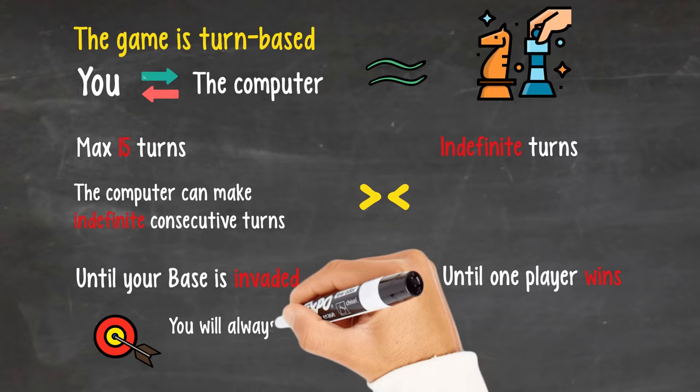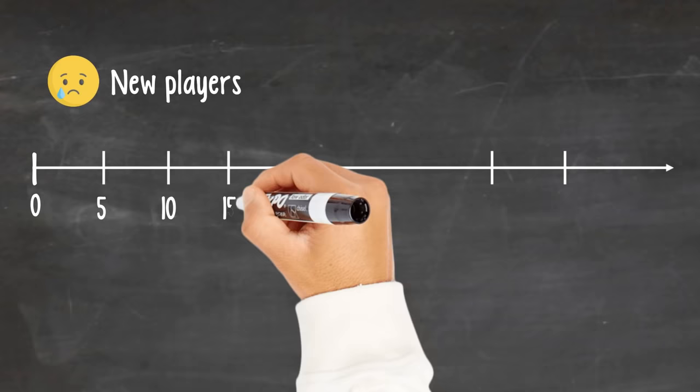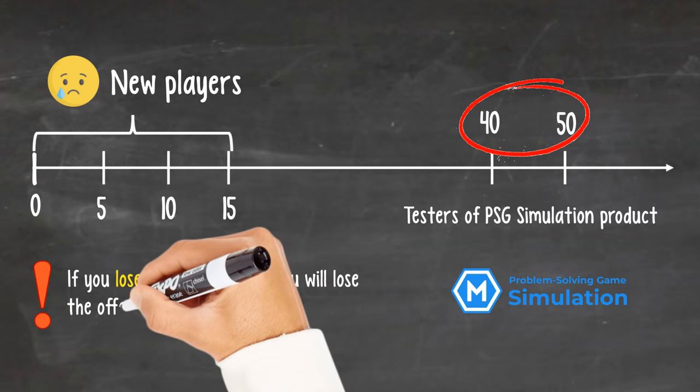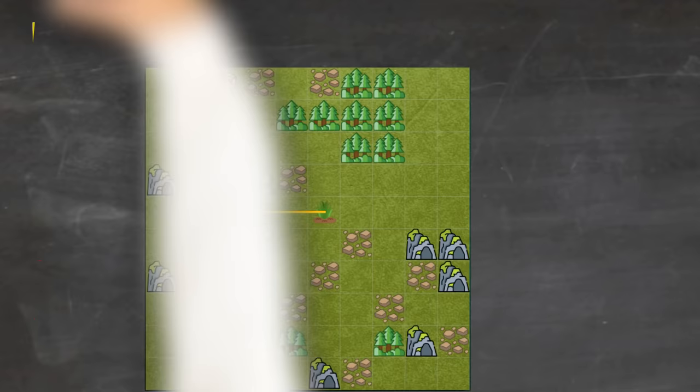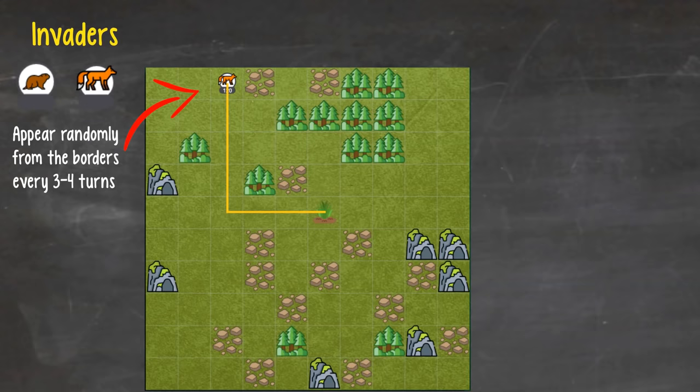The game is turn-based, so you make a move, then the computer makes another move. Then back to your turn. This aspect of the game is somewhat similar to chess. The difference is that in chess, both opponents play an indefinite number of turns until one player wins. In this game, you can only play a maximum of 15 turns. Then the computer can make indefinite consecutive turns until your base is invaded, so you will always lose in this plant defense minigame. Your objective is to delay that for as long as possible. Most new players will be taken out even before the 15 turn mark, but I've seen testers of our PSG simulation product making it to 40 or even 50 turns. No matter how good your process score is, if you lose in the 14th turn, you will lose the offer to the one making it in 50 turns.